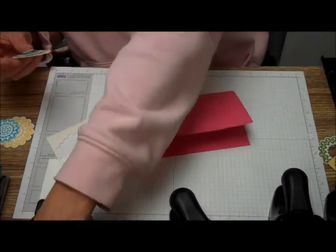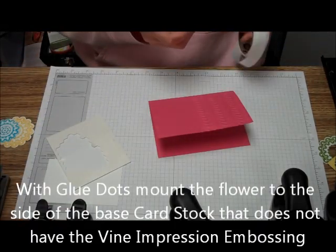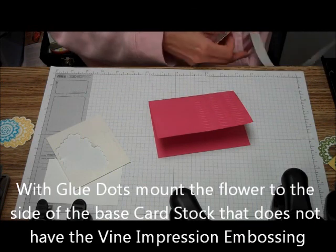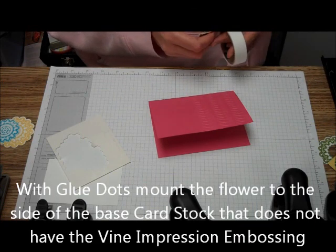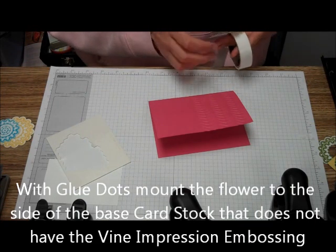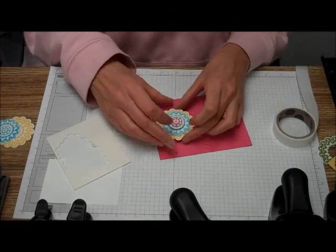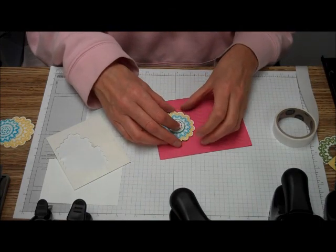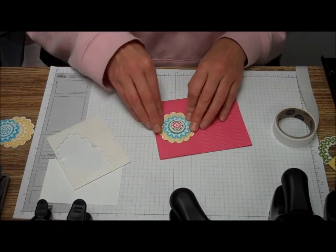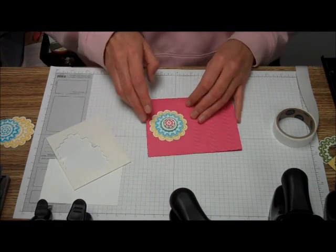Now we're just going to take our glue dots to put three glue dots on the back of this, about the middle of the page, middle of the cardstock, on the side that is not embossed.